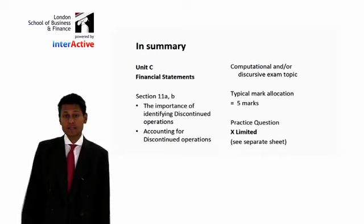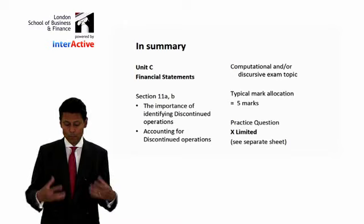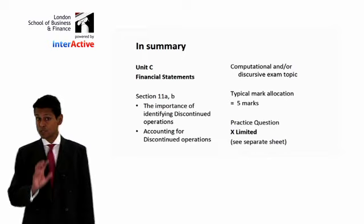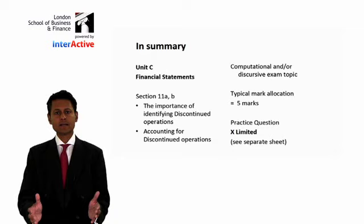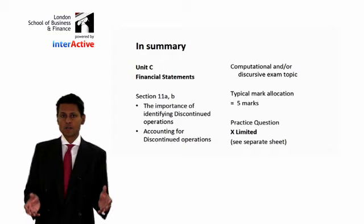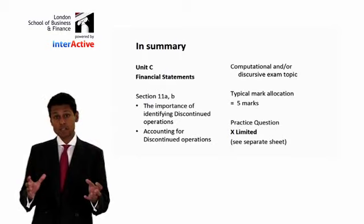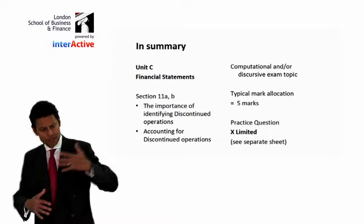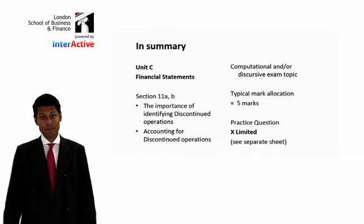In section 11, unit C, you've got to talk about the importance of identifying discontinued operations. Why would the shareholder be interested in discontinued operations, rather than just lumping them together with a total figure as the Companies Act requires? IAS-8 adds a dimension otherwise missing from the Companies Act. The Companies Act itself says you've got to recognize all the standards that come out, so it does recognize it indirectly.